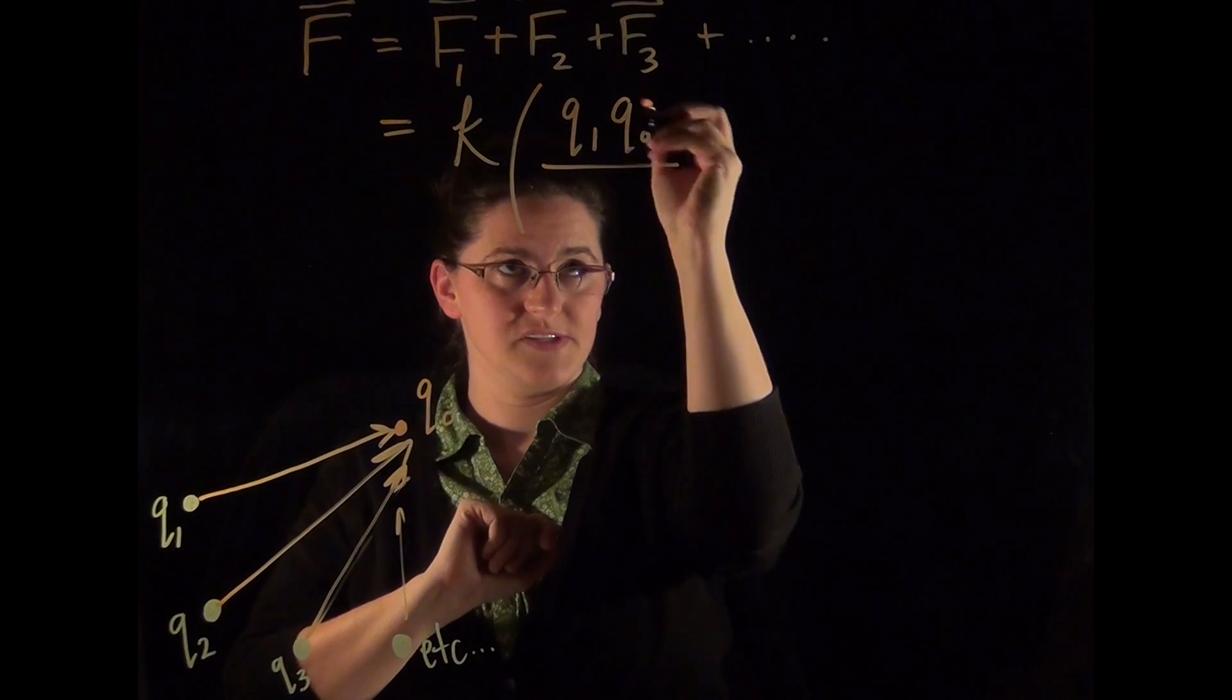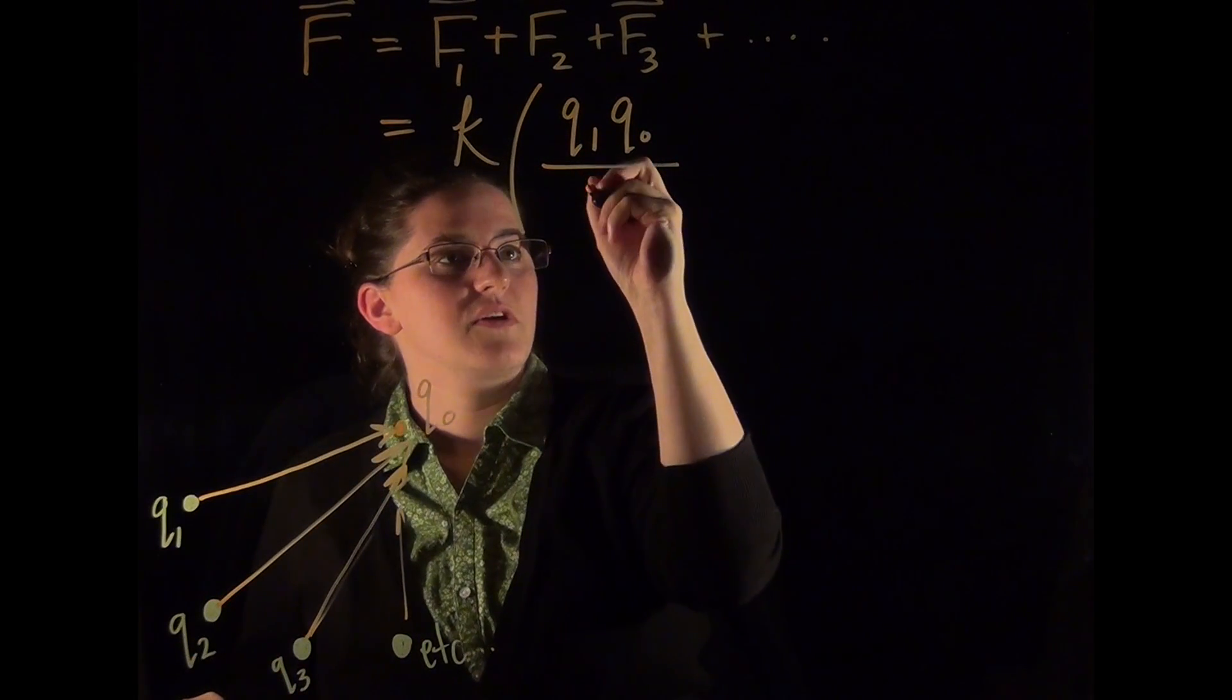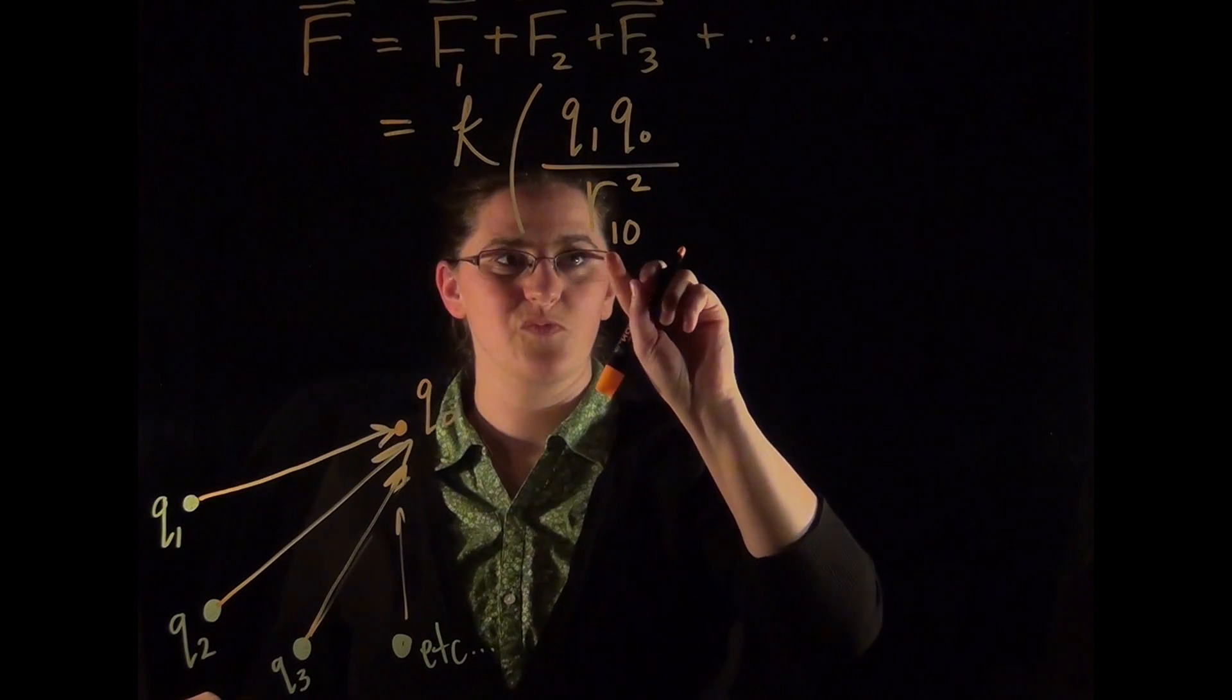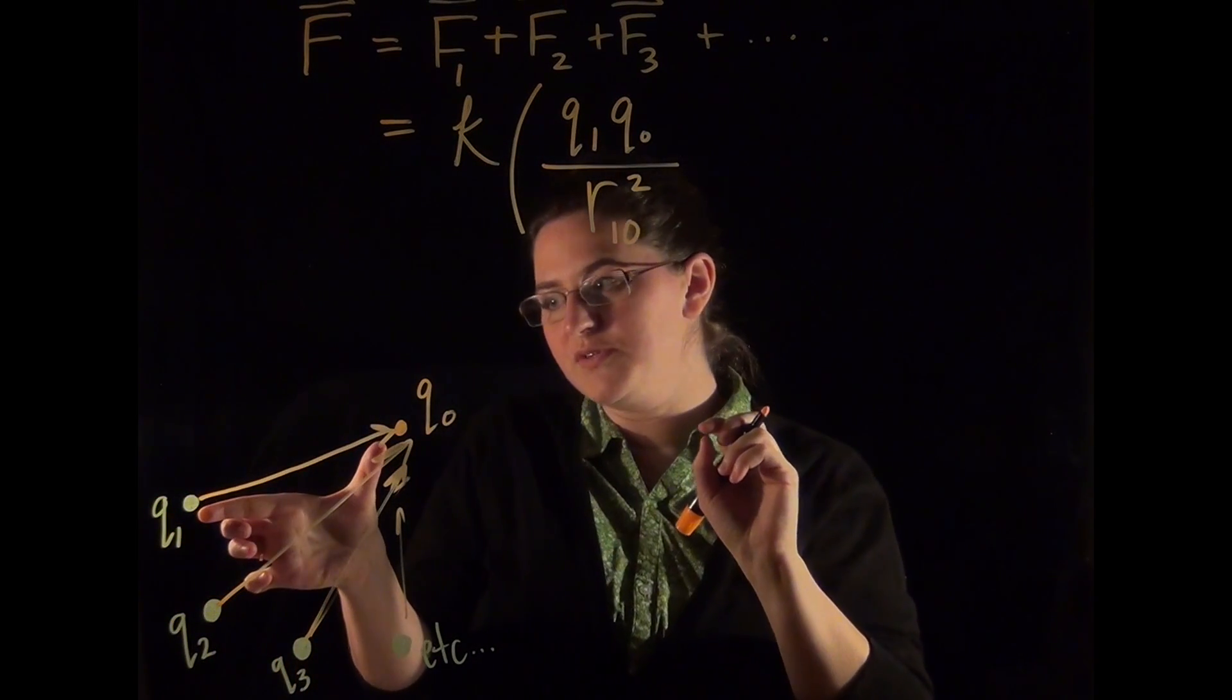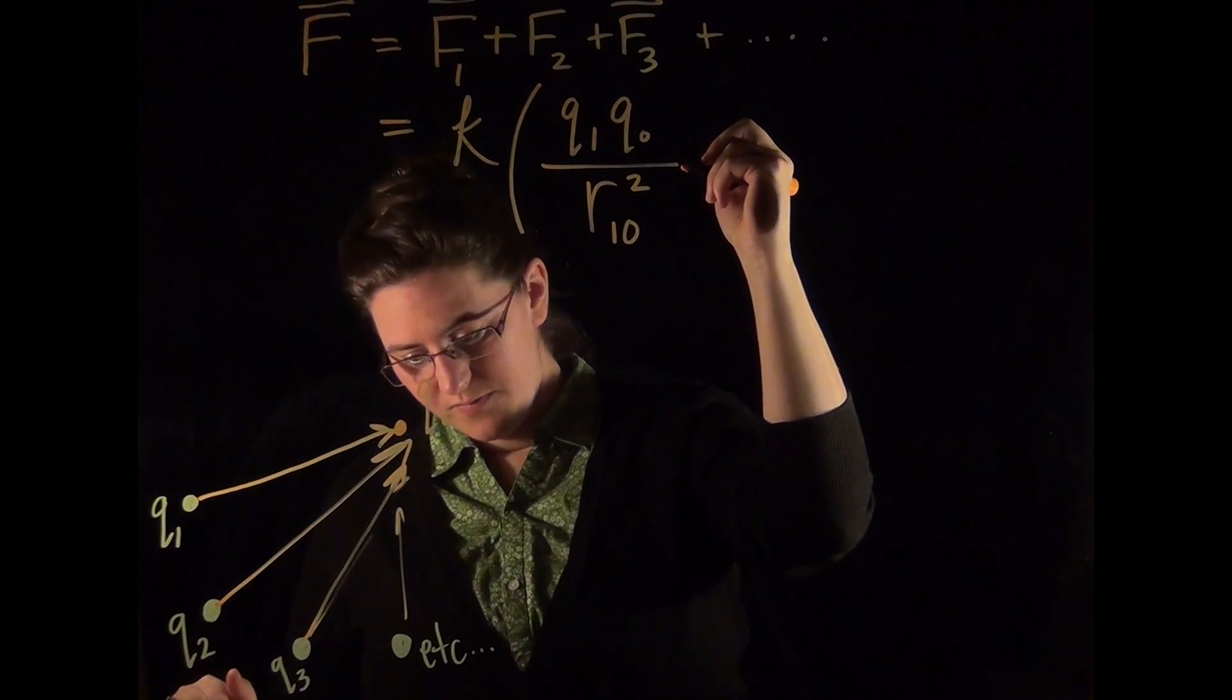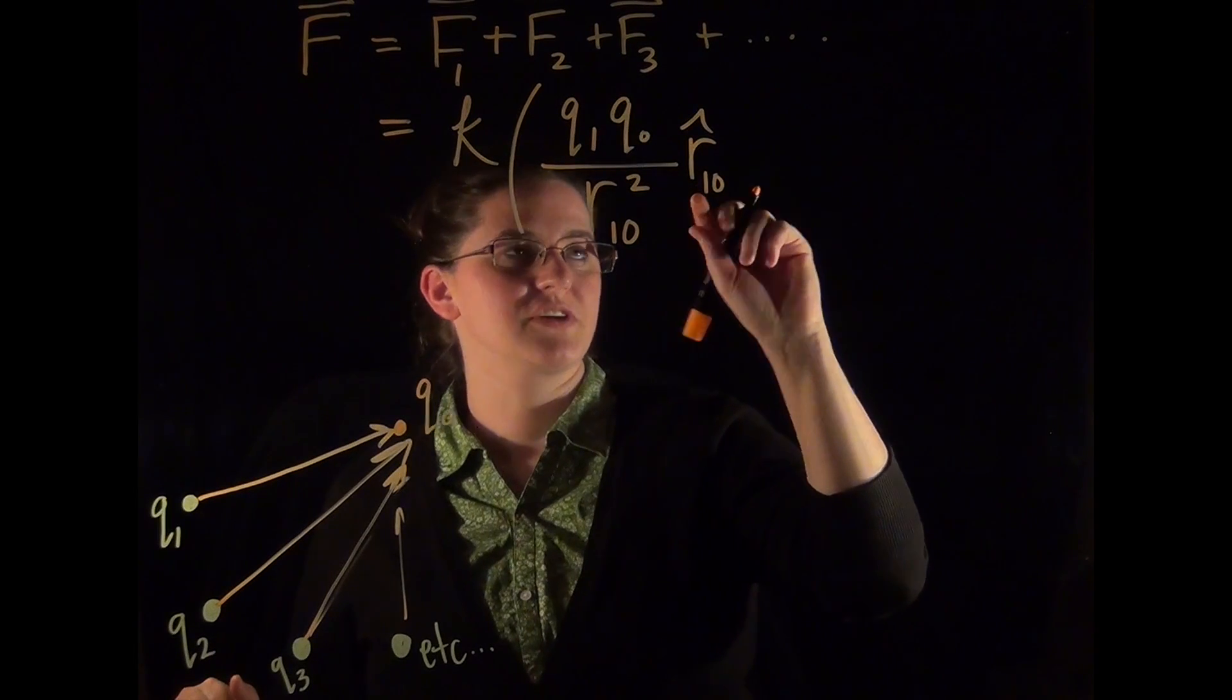Q0 is the test charge, and the source charge value. Now they are each going to be over the distance between Q1 and Q0, this is R10, that's squared. And we know this is a direction vector.